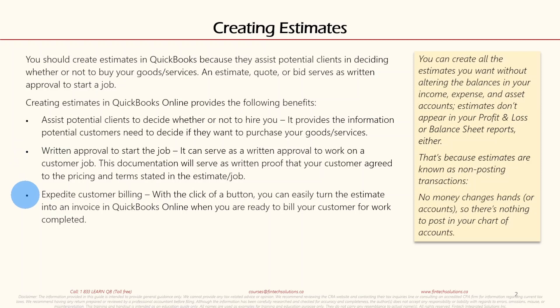Next is expedite customer billing. With the click of a button, you can easily turn the estimate into an invoice in QuickBooks Online when you're ready to bill your customer for work completed. Many users wonder if they need to redo everything — you don't. In QuickBooks Online there is a simple function where you click on it and it copies the estimate to the invoice, and you decide what you want to invoice your customer.